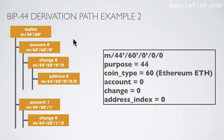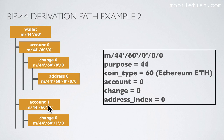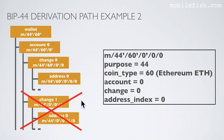This is another example. The purpose is 44, but now we are using coin type 60, which means Ethereum. This wallet is an Ethereum wallet which complies to Bitcoin Improvement Proposal 44. As with the Bitcoin wallet, we can create multiple accounts — account 0, account 1, and more. We can use one account as our payment account and another as our savings account. But in an Ethereum wallet, we usually only use one change level. Below every account level there will be only one change level — change level 0. Below change level 0 you can find all the addresses.